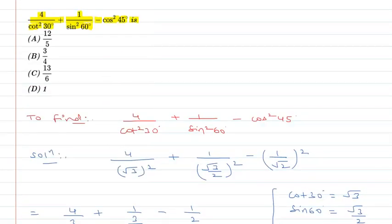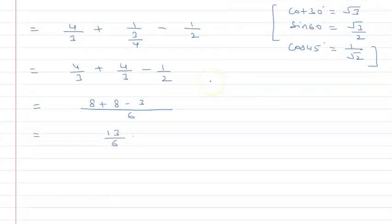If I check the option, then option C is 13 upon 6, which we match with the answer. Option C is correct.